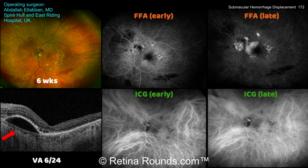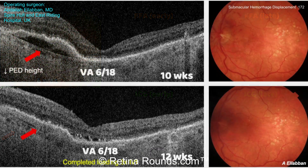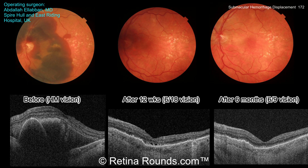Here's both fluorescein angiography and ICG angiography for this patient. In the early frames of the fluorescein angiogram, there's some window defect and leakage in the later frames. On the ICG, you can see small polyp-like lesions in the area of leakage that are present in the early stages and persist later, which is highly suggestive of polypoidal choroidal vasculopathy. At 10 and 12 weeks, the pigment epithelial detachment has largely settled down and the submacular hemorrhage has completely dissipated. From pre-op to 6 months after surgery, baseline vision of hand motion improved all the way up to approximately 20/30 with a tremendous restoration of normal anatomy in the macula.